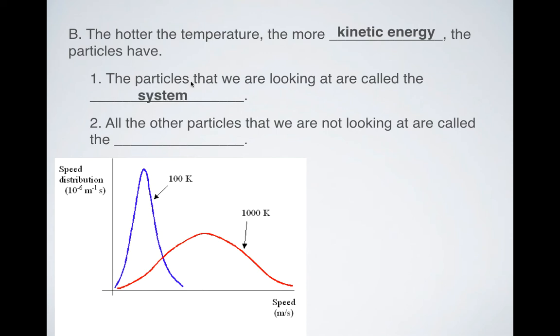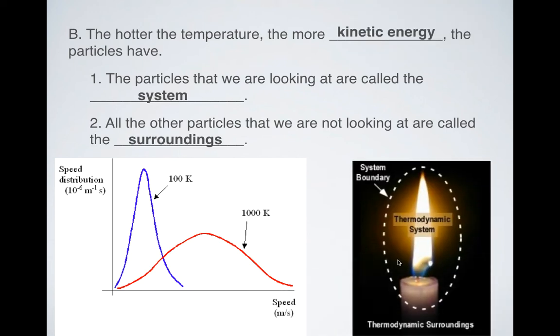Now, the particles that we're looking at, we call those the system. And everything else is the surroundings. And it's up to you to determine your system unless it's given to you in a question. So if you're looking at a candle burning, you can say the system that I'm looking at is the wick, and the candle, and the flame. The surroundings are everything except for that. So you can picture the room that it's in, or the house that it's in, or the state the house is in, or the country the house is in, or the entire earth, or the entire universe. The system is all we care about. The surroundings are everything else.